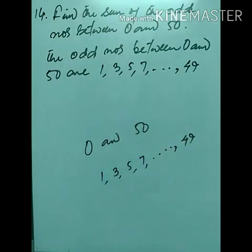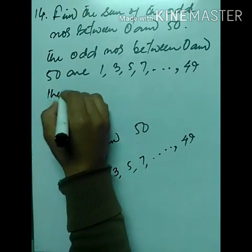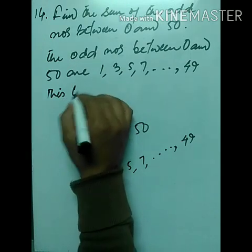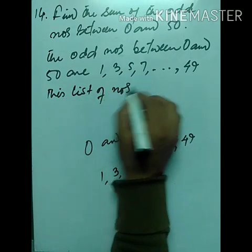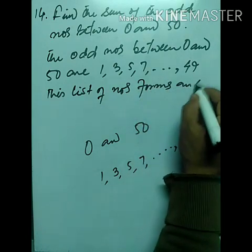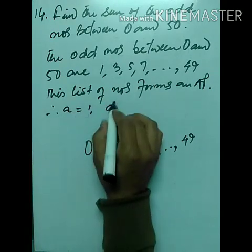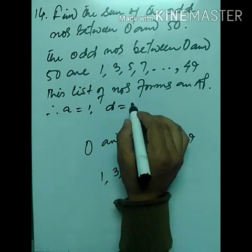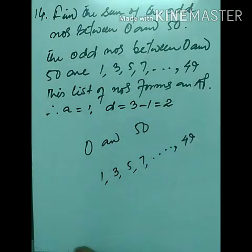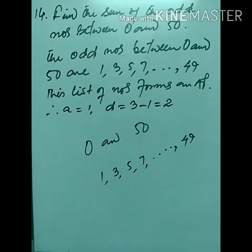The odd numbers between 0 and 50 are: 1, 3, 5, 7, …, 49. This list forms an AP. Therefore first term a = 1 and common difference d = 3 − 1 = 2. We know the first term and common difference, but we need to find the number of terms first.